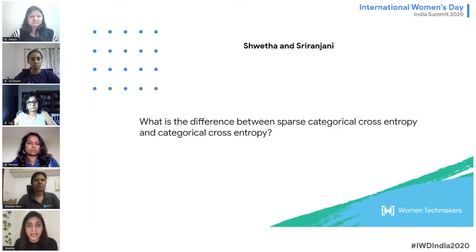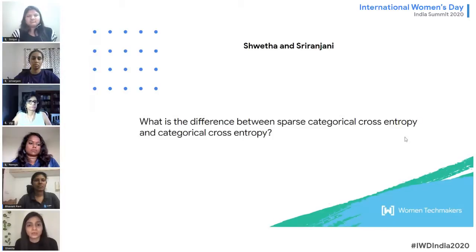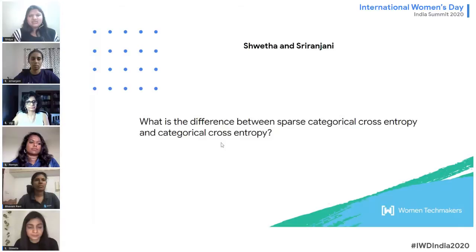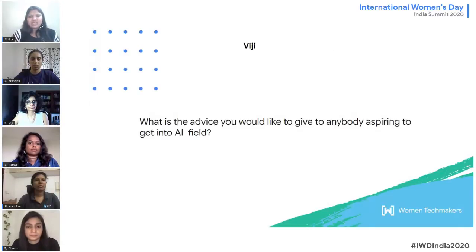When you represent target labels as one-hot encoded vectors, you use categorical cross entropy. But if you represent your target variables as actual numbers — such as one, two, three up to nine, or cat is one, dog is two, ferret is three — then you use sparse categorical cross entropy. That is the difference between the two metrics.